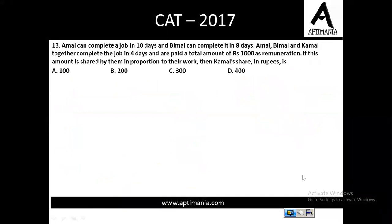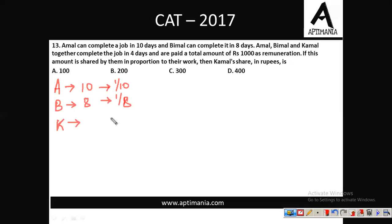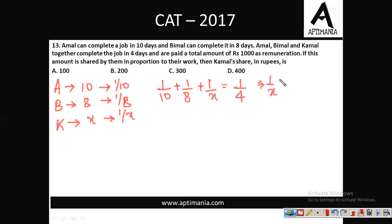Question number 13: Amal can complete a job in 10 days, so 1 day work = 1/10. Bimal can complete the job in 8 days, so 1 day work = 1/8. Amal, Bimal and Kamal together complete the job in 4 days; let Kamal's time alone be x. Forming the equation: 1/10 + 1/8 + 1/x = 1/4. Solving, 1/x = 1/4 − 1/8 − 1/10 = 1/40, so Kamal alone takes 40 days.